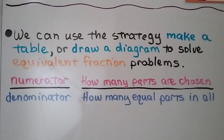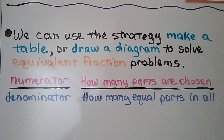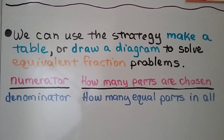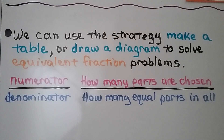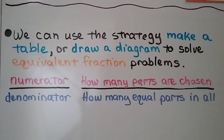In lesson 6.4, we learned how to make equivalent fractions by using common denominators. We can use the strategy of making a table or drawing a diagram to solve equivalent fraction problems. Remember, the numerator is how many parts are chosen or shaded, and the denominator is how many equal parts in all.